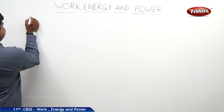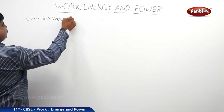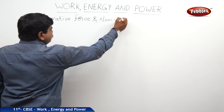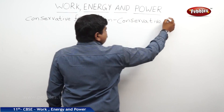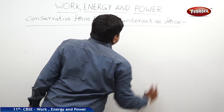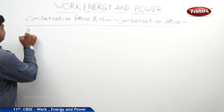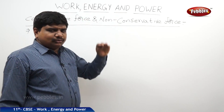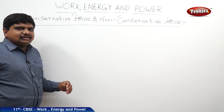The next concept is conservative force and non-conservative force. To do some work, an applied force is necessary — force is the minimum essential quantity to be applied on a body to do work. These forces are divided into two types: one is conservative and the other is non-conservative.